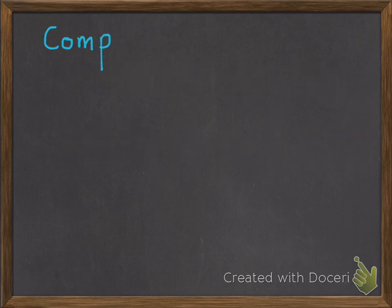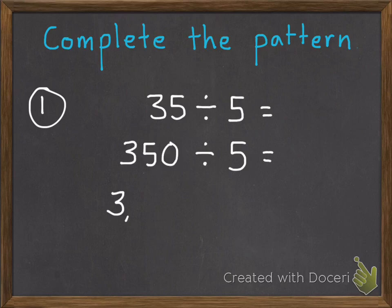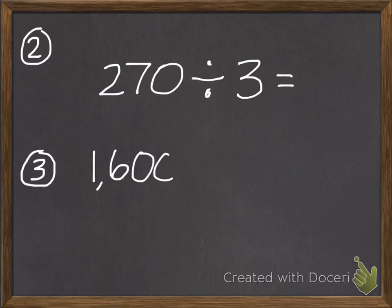Now you're ready for three problems you're going to bring to class tomorrow. So the first is to complete the pattern. 35 divided by 5, 350 divided by 5, and 3,500 divided by 5. Problems 2 and 3. Problem 2 is 270 divided by 3. And your last problem, problem 3, is 1,600 divided by 8.